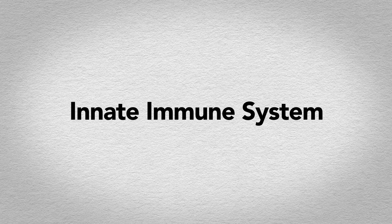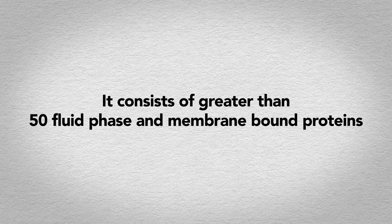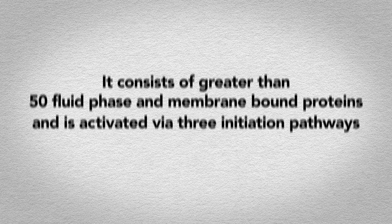The complement system is a part of the innate immune system that helps, or complements, antibodies and phagocytic cells to clear foreign bodies. It consists of greater than 50 fluid phase and membrane-bound proteins and is activated via three initiation pathways.